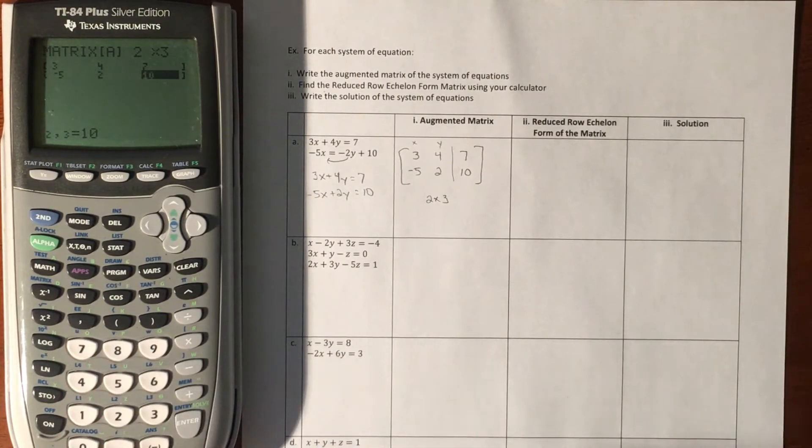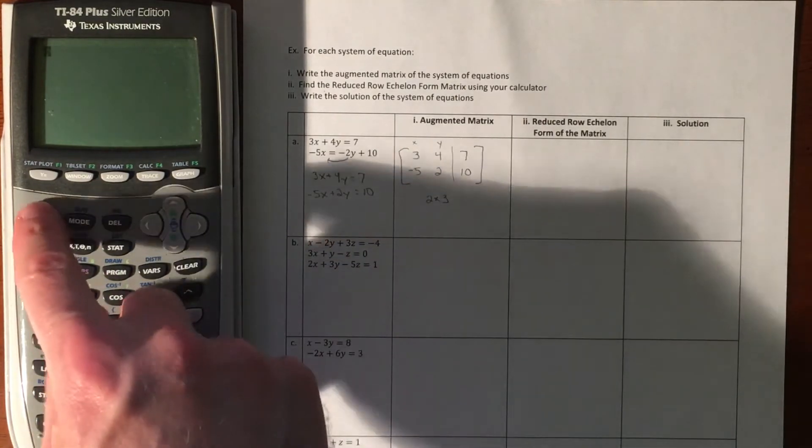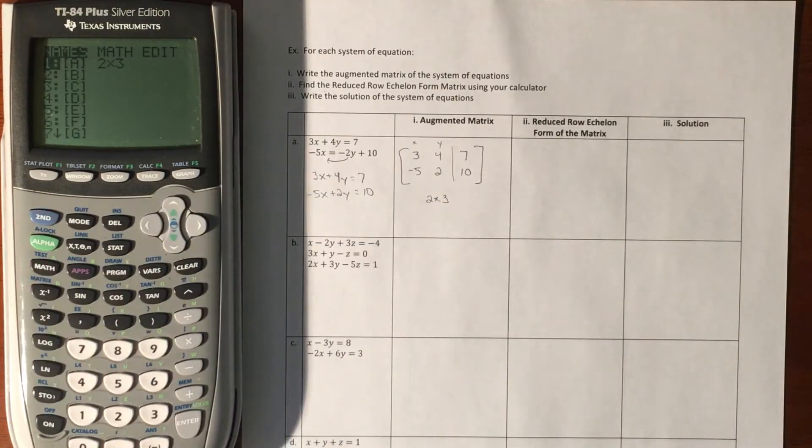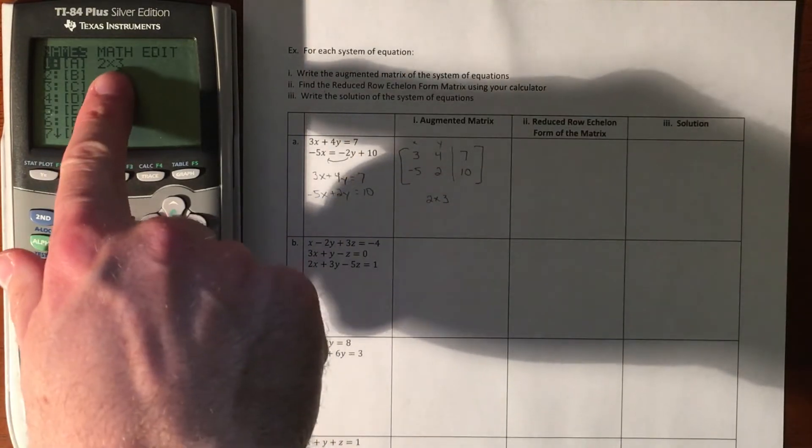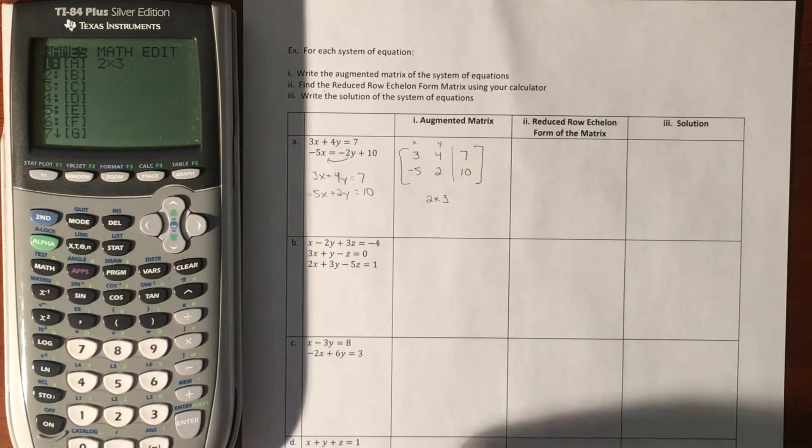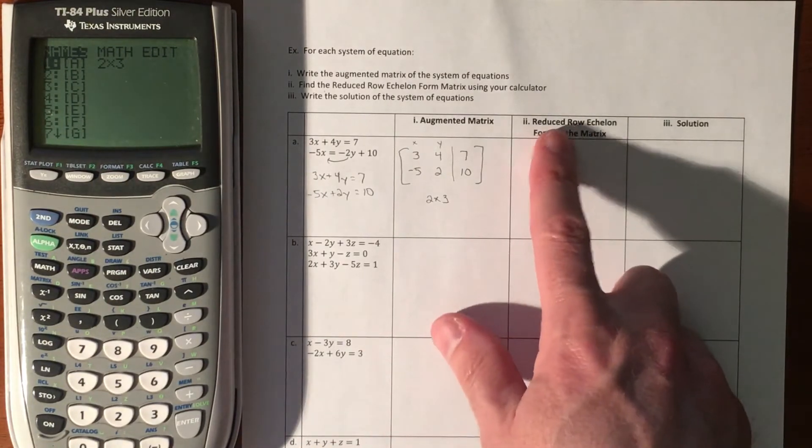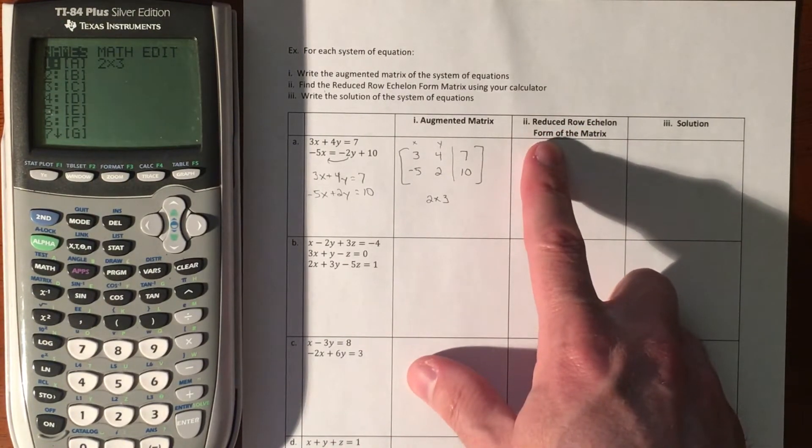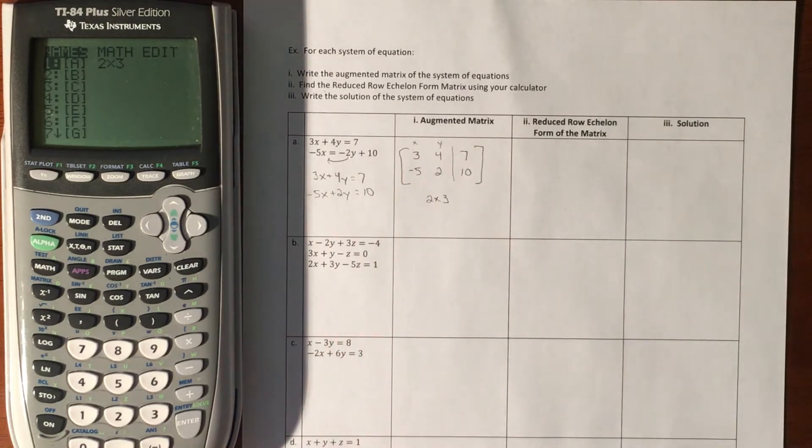Now we're going to exit out, go back into your matrices, and now that is matrix A. To do this, we are going to do what's called reduced row echelon form, which basically will do the elimination for you.